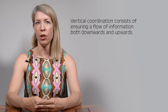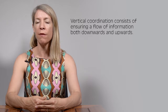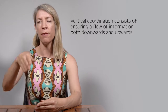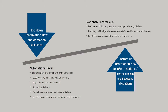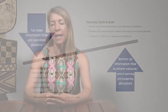Vertical coordination consists of ensuring that there is a flow of information both upwards and downwards. There is a need for top-down information to flow from the national or central level to provide policy and operational guidance, and there is a need for bottom-up flow of information to inform national or central planning and budget allocations.